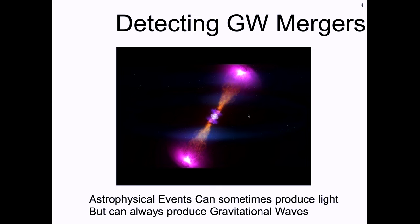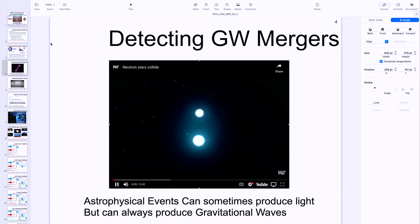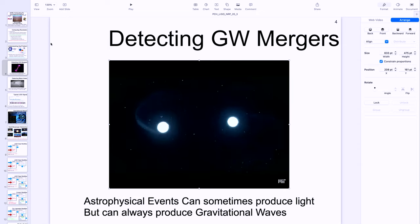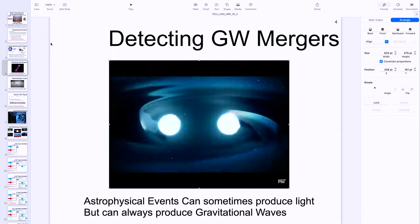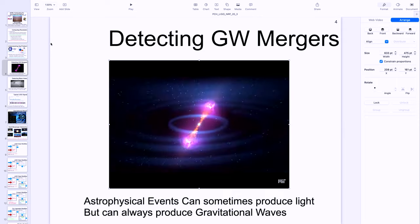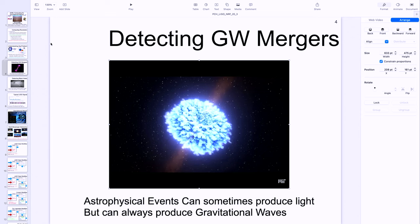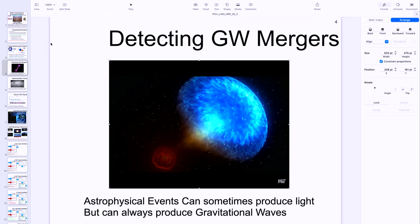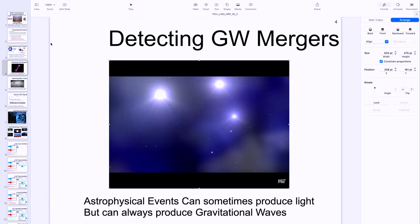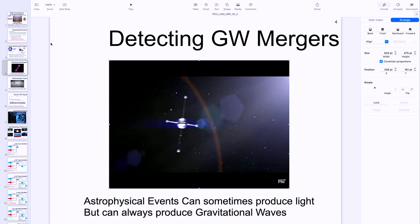Now I want to talk about gravitational waves. Gravitational waves are produced in large catastrophic events in the universe — typically compact binary coalescence, where two objects merge and produce an incredible explosion. These objects could be black holes or neutron stars. You get all sorts of radiation, including visible light, but first, traveling at the speed of light, you get gravitational waves.